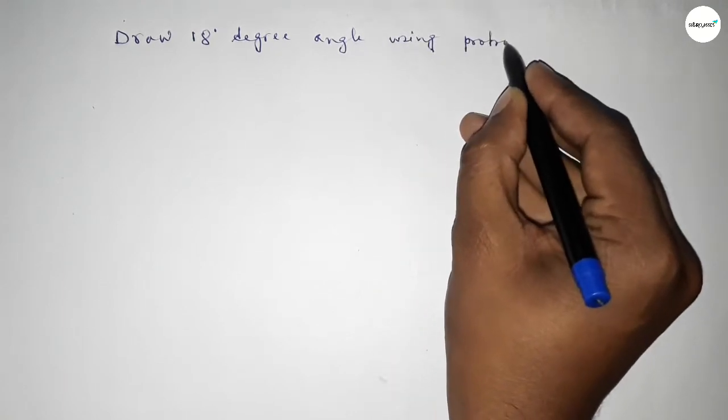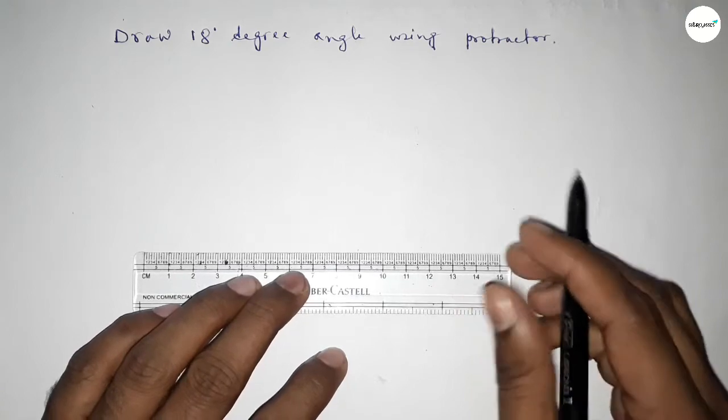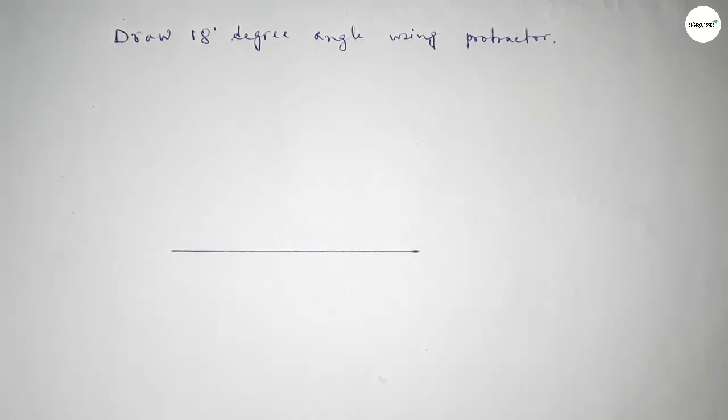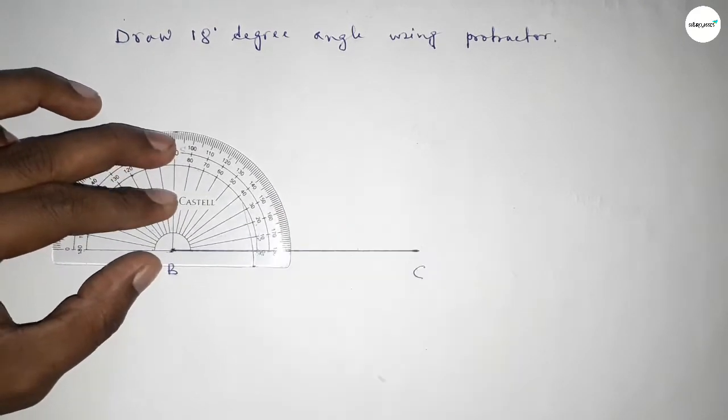So constructing an 18-degree angle. Let's start the video. First of all, we have to draw here a line of any length and take here point B and here point C. Now putting the protractor on point B.